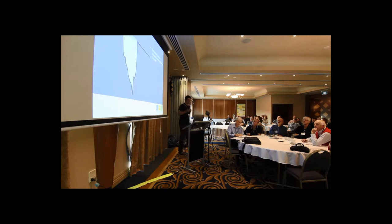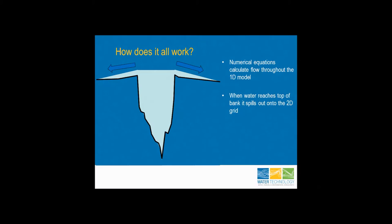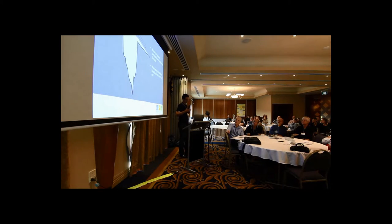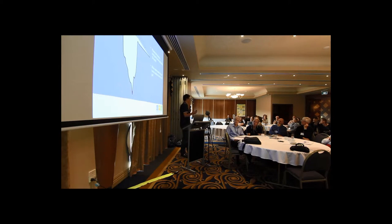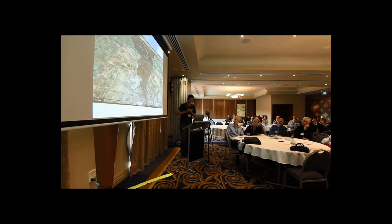We've got that 1D model representing the linear features like the rivers and waterways. The model, using numerical equations, works out how high and how fast the water travels down those creeks. And then once it gets up to the top of the bank, it spills out into the 2D model, which is where the LIDAR dictates where all the water's going. And that's when the magic happens.